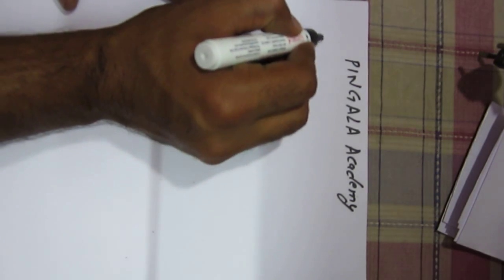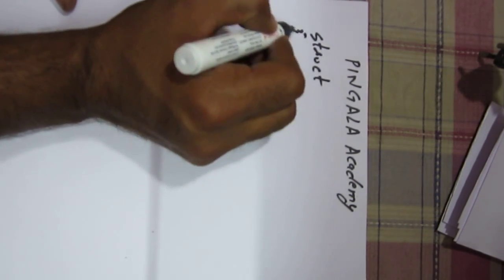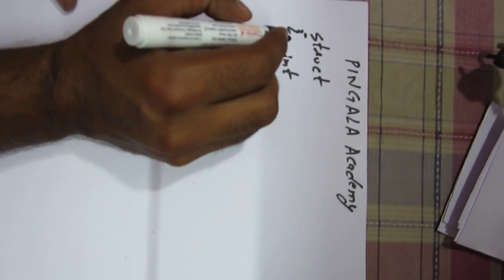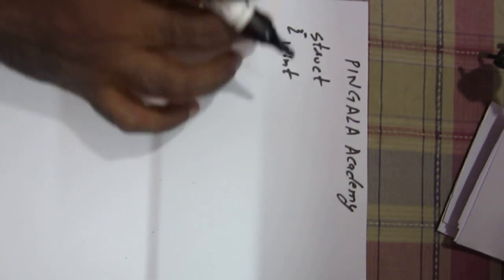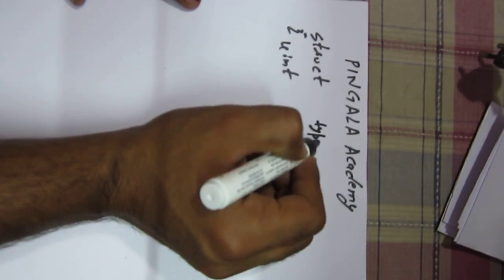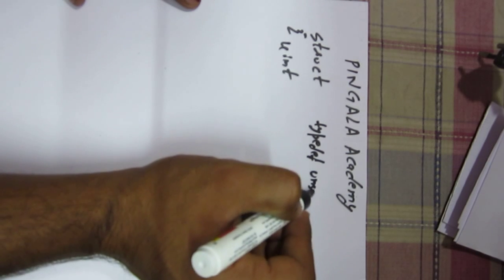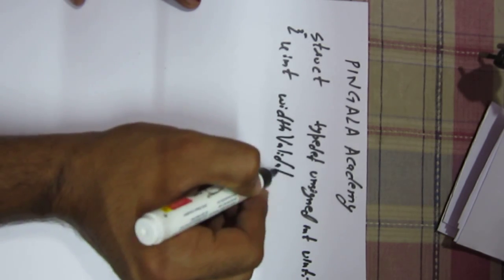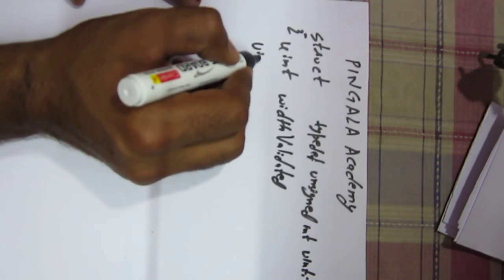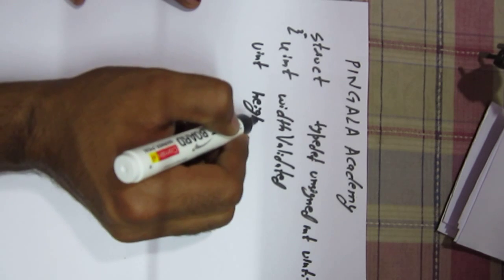If we say we have a structure that stores two variables, suppose we are having an unsigned int. uint is the short form, which can be written as typedef unsigned int as uint. Suppose we need to store width_validated—this is a flag—and again uint height_validated.